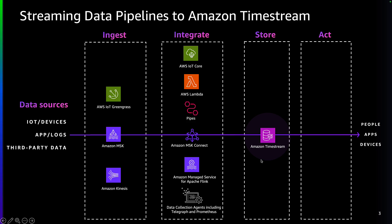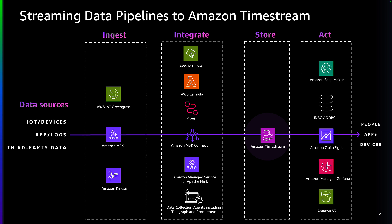Now that we've got the data streamed to Timestream, the next step is to analyze and consume the data in the format that your data consumers need. There are many ways and it depends on your use cases. You can visualize the data using Amazon QuickSight and build dashboards, or you may want to export to S3 in their original form and do further analysis. Using these options, you can stream your time series data in and around Timestream tables.